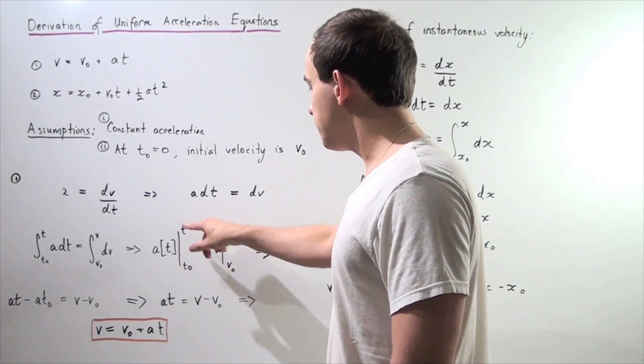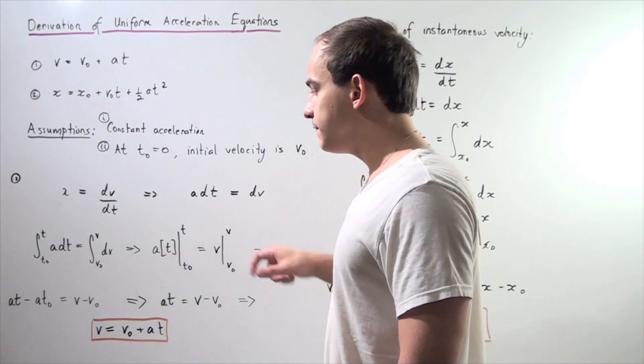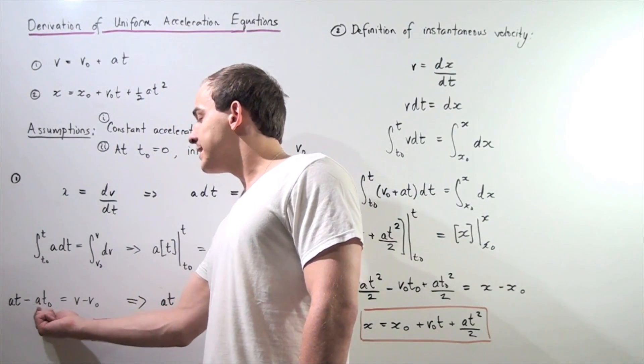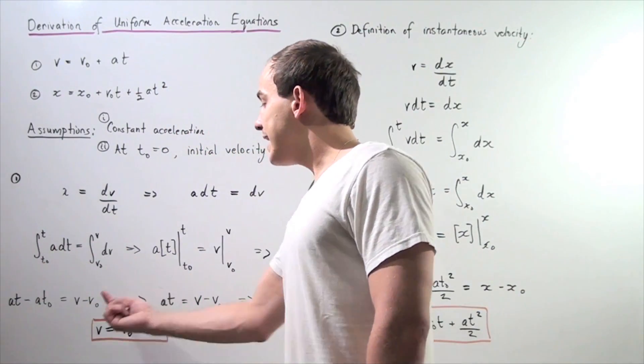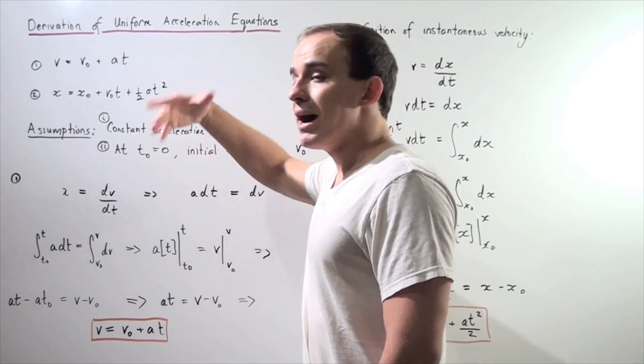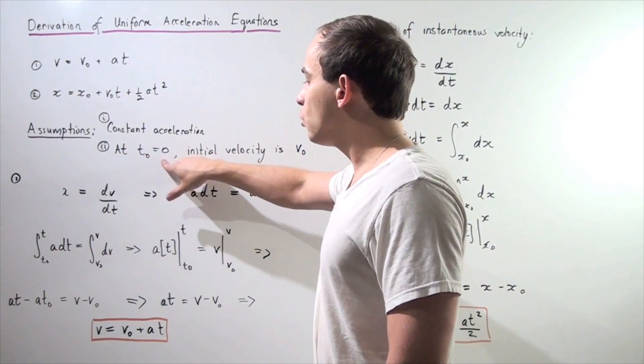Let's actually distribute the t-naught and t and v-naught and v, and we get A times t final minus A times t-naught, our t initial, equals v final minus v initial. Now, notice by assumption our t-naught equals zero.